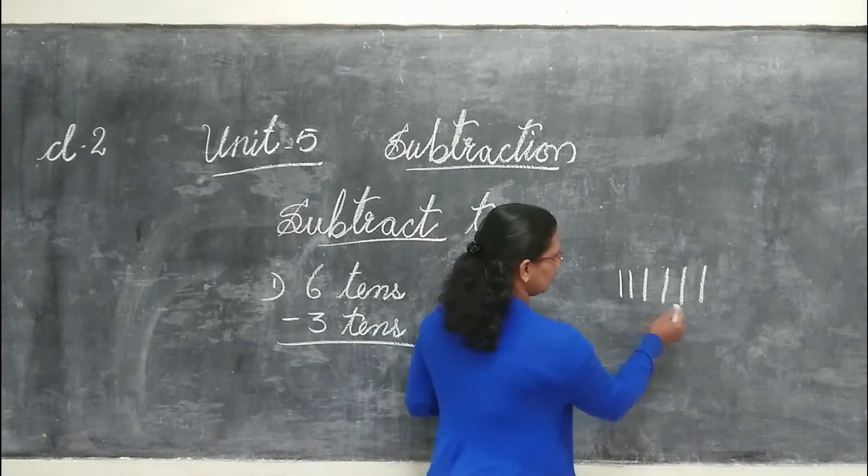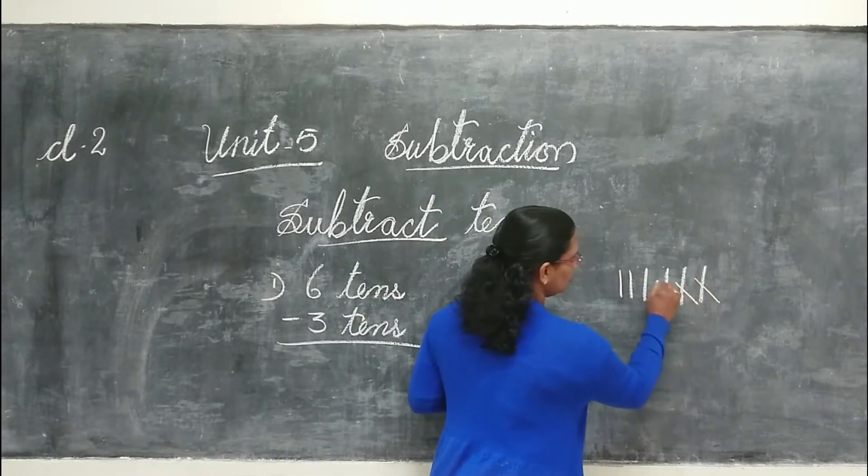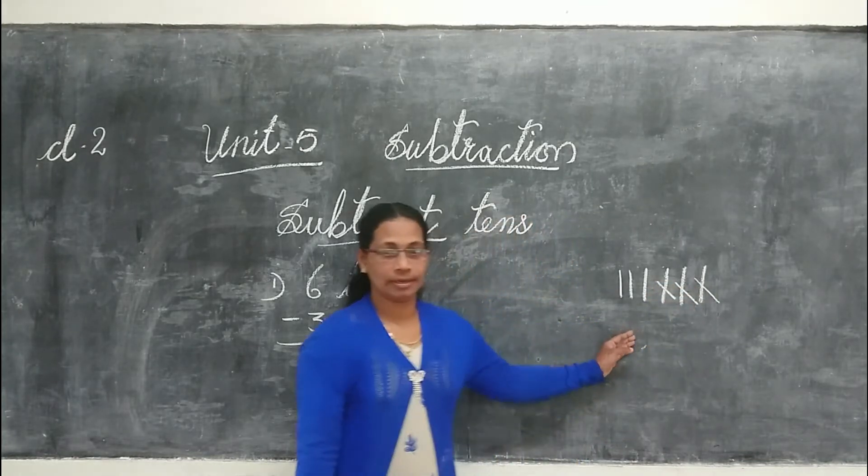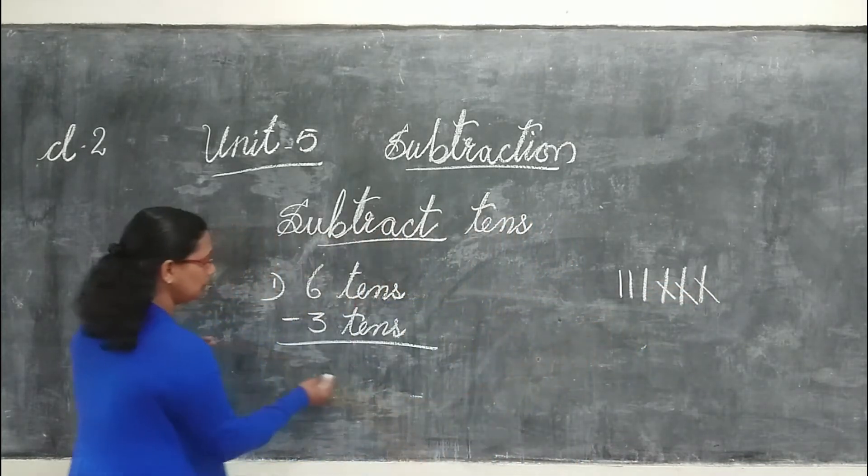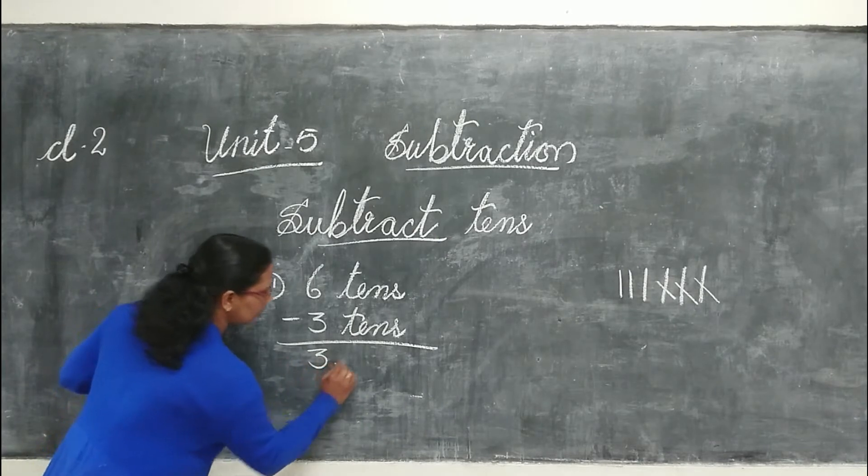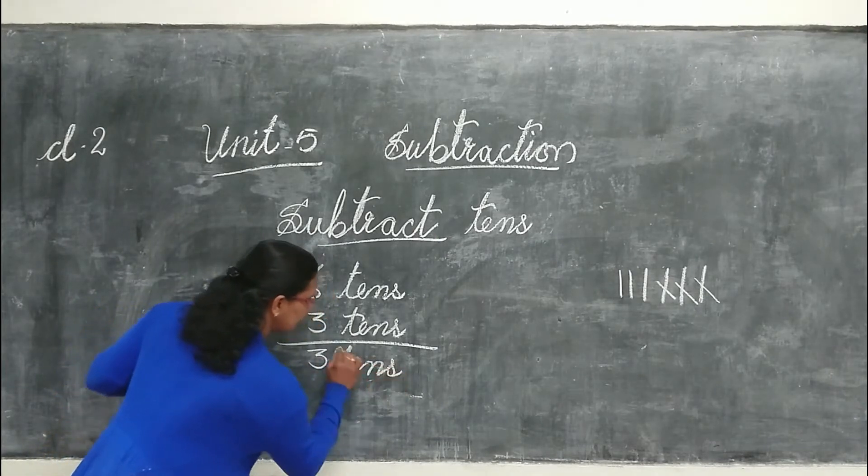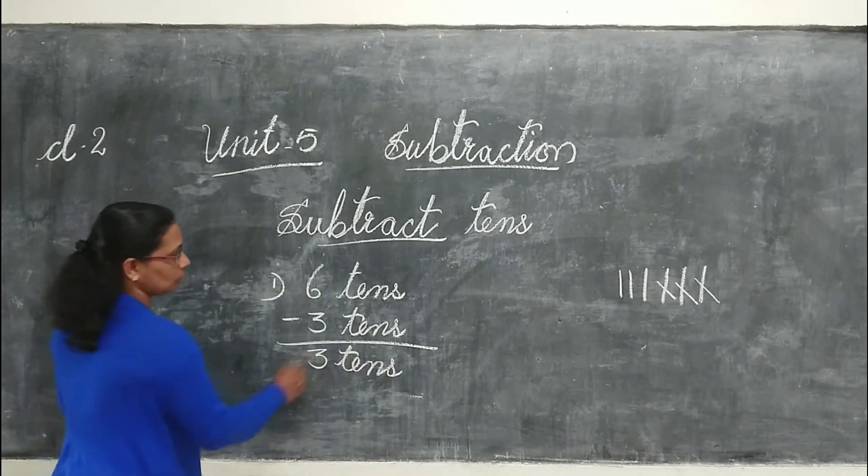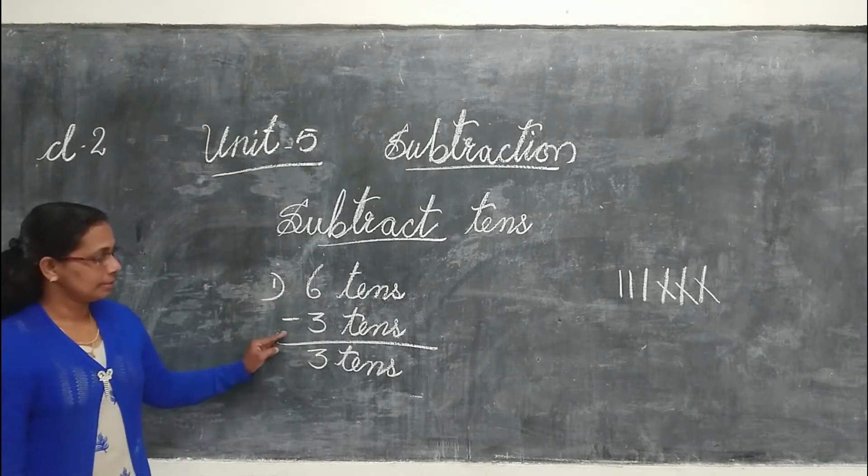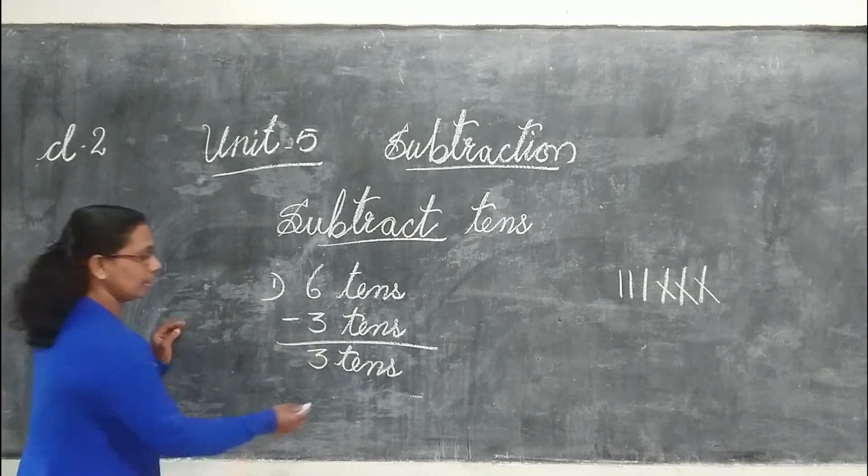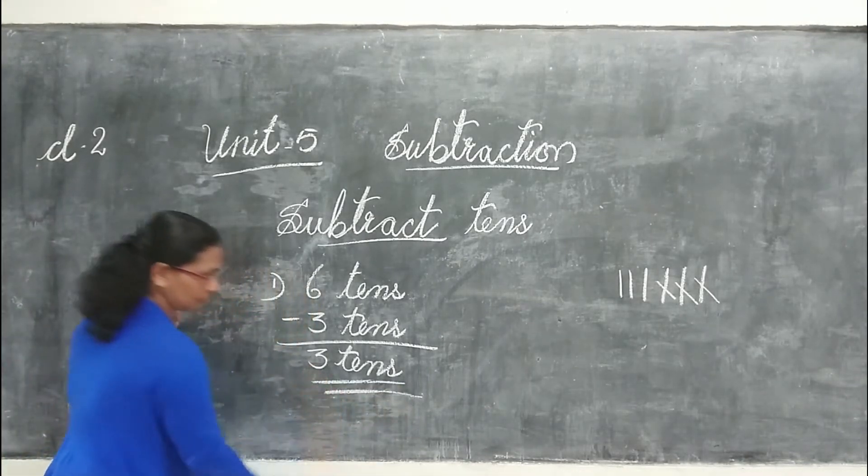So we can write it here: 1, 2, 3. How many lines remain here? 3 lines. So we can write 3 tens. Therefore, 6 tens minus 3 tens is equal to 3 tens.